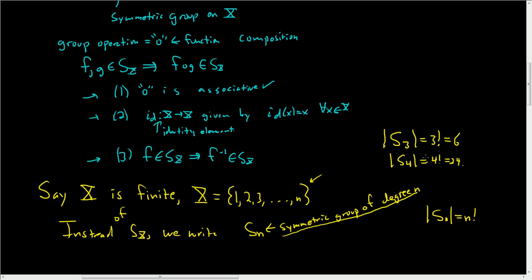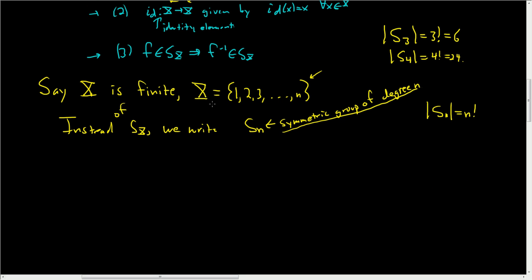Let's go ahead and look at an example of a way to write the elements of this group, because thinking of them as functions from X to X does get a bit cumbersome. There's some notation that was created that we can use to help simplify things. It's called array notation—some people also call it two-line notation.